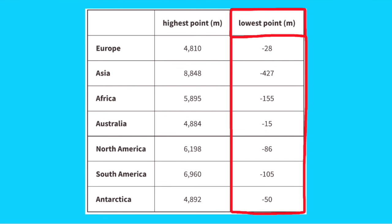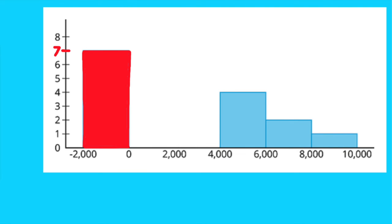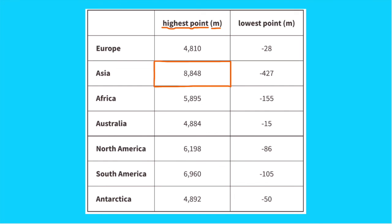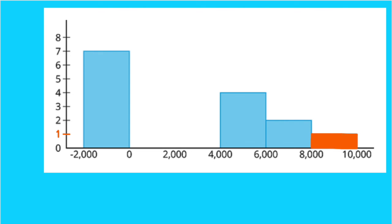Looking at the table, all seven continents have a negative lowest point. On the histogram, the vertical axis represents the number of continents and the horizontal axis represents elevation in meters. The red column shows that the lowest points of all seven continents fall between 0 and negative 2,000 meters. Asia's highest point is much higher than all others, shown in orange — one unit high, representing one continent with an elevation between 8,000 and 10,000 meters.